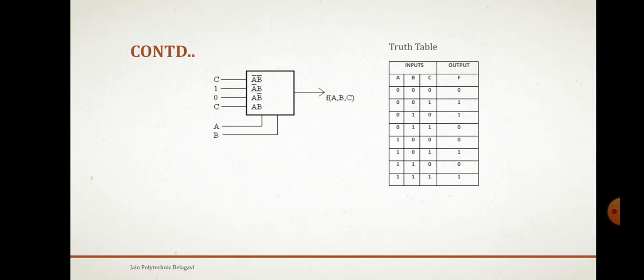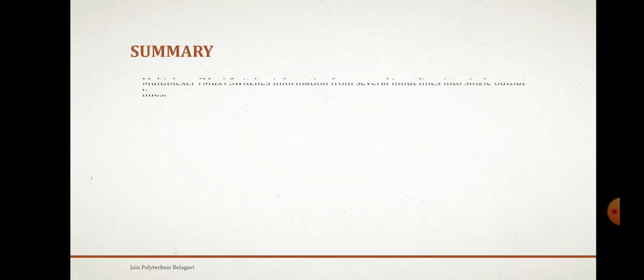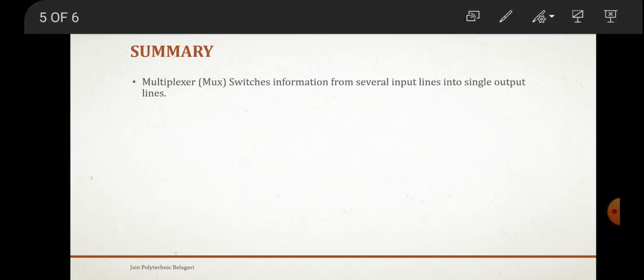You can observe that c will be there, a bar b bar for us, c one zero c and ab you are going to provide. A value and b are the select lines, f of ab will get after implementing.